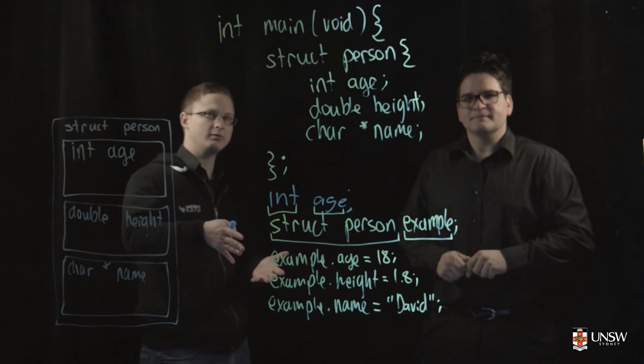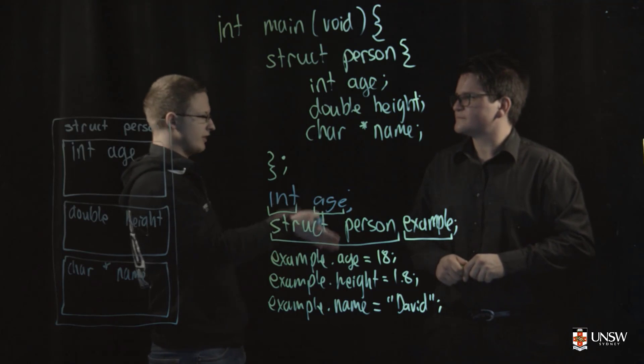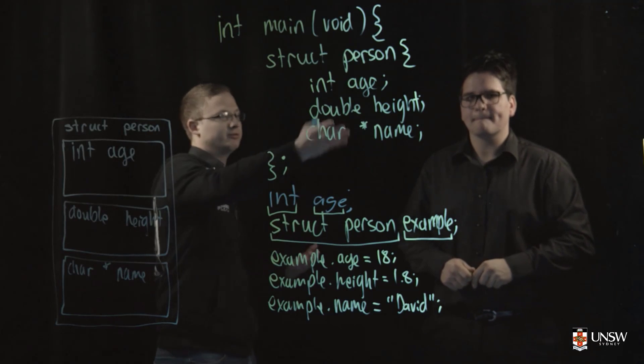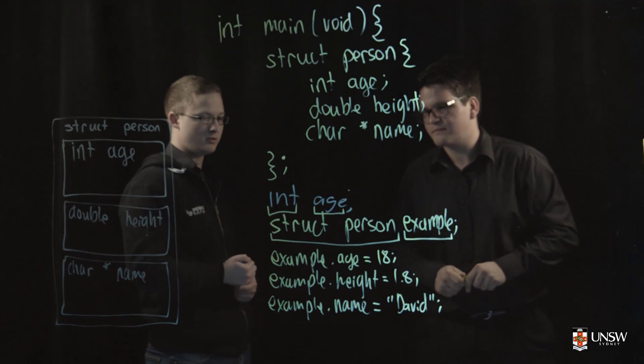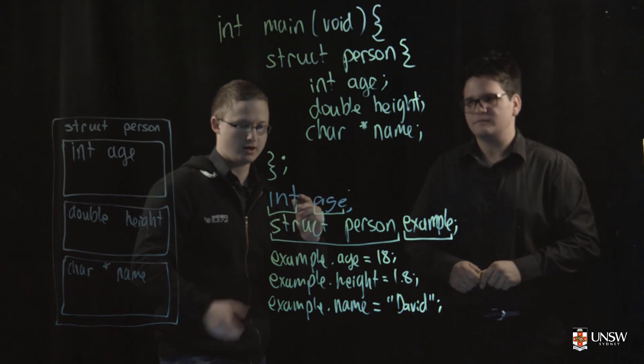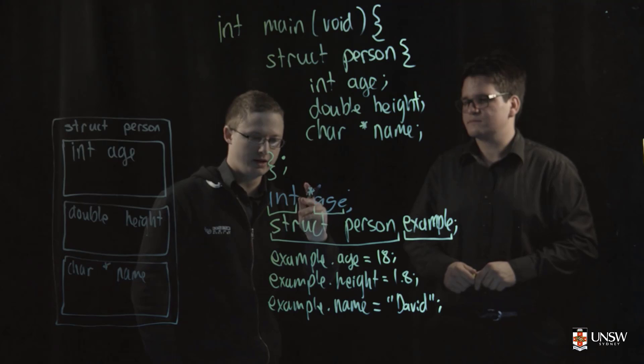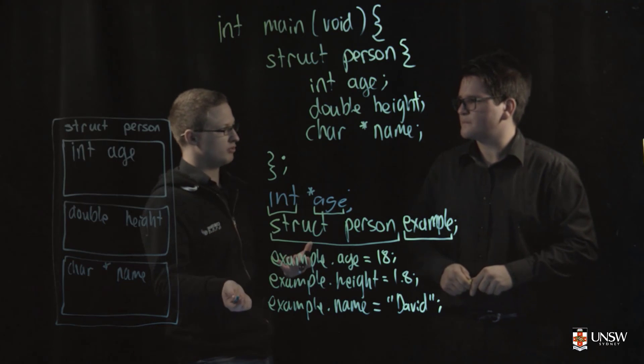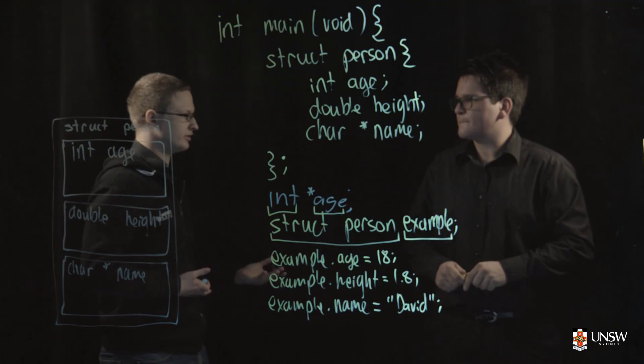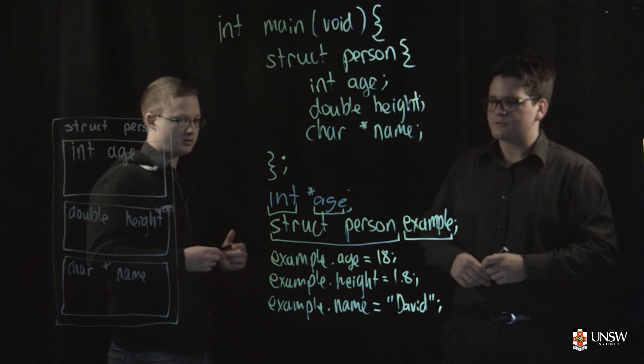Okay. So it's all very similar to using variables on their own such as age, height, and int, doubles, and whatnot. But what if I wanted to say extend this analogy by saying it's an integer pointer? Do we have struct pointers as well? Yeah, absolutely. We do have struct pointers. You can create a pointer which points to a struct.